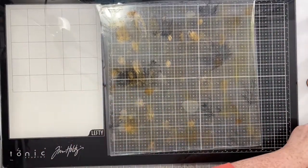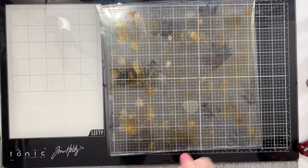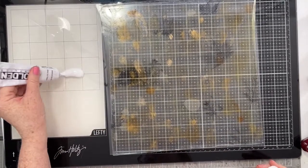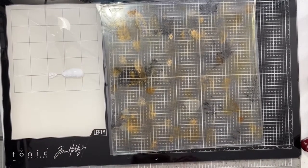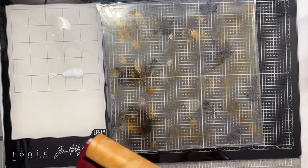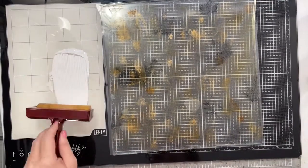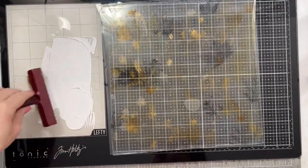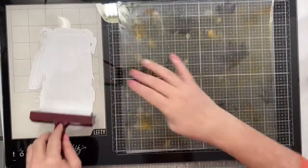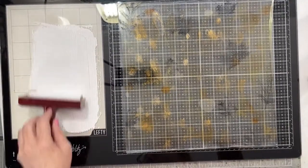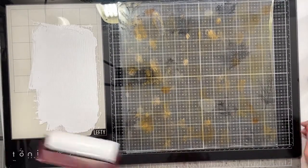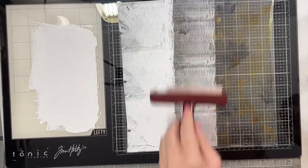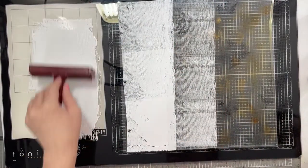Once everything has dried, come back, grab your white acrylic paint, put it on a media mat or a nonstick craft mat. Don't put it directly onto the gel press. You want to load the brayer up with the white paint. But you need to be a little bit careful when you're putting it on your gel press. Everything on the gel press should be completely dry. That's very, very key. Very important that everything be dry.